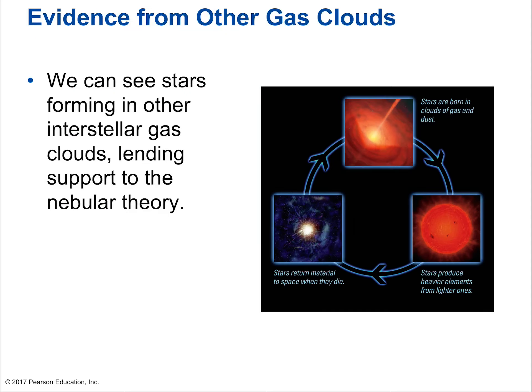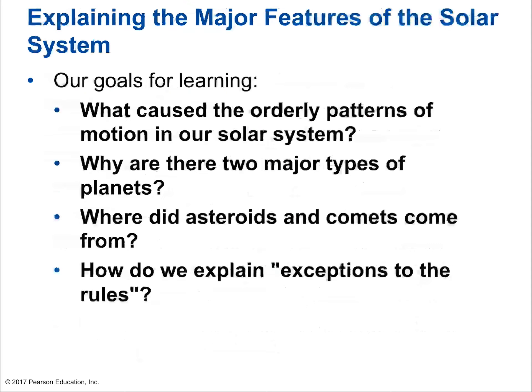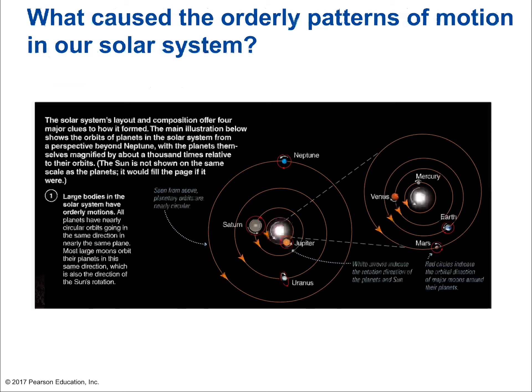Elements that formed planets were made in stars and then recycled through interstellar space. There have been many generations of stars before our own solar system. We can see stars forming in other interstellar gas clouds, lending support to the nebular theory. To summarize: the four major features of the solar system are explained by the nebular theory, and we actually observe nebulae with characteristics our early solar system must have had some four and a half billion years ago.